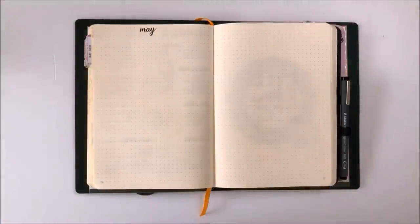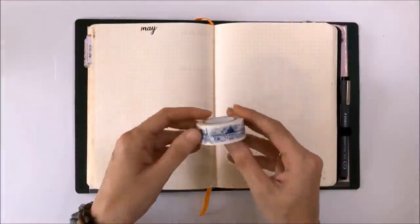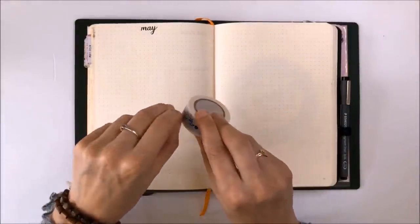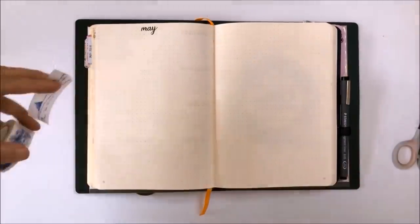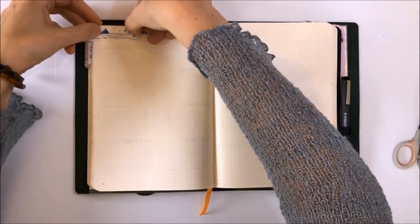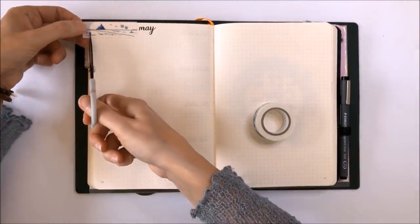I'm starting with a Tombow calligraphy pen with a firm nib to write in the month of May, and I'm now using some of my new washi tapes from London Gifties to highlight that heading.